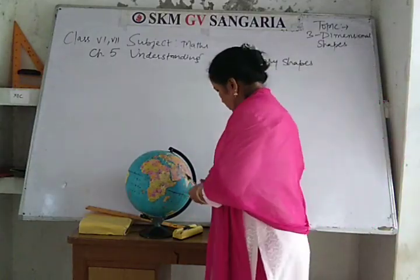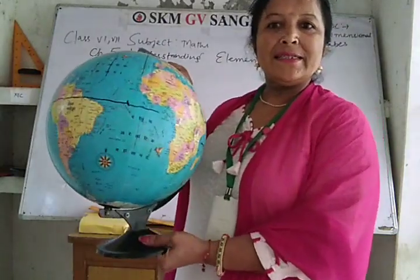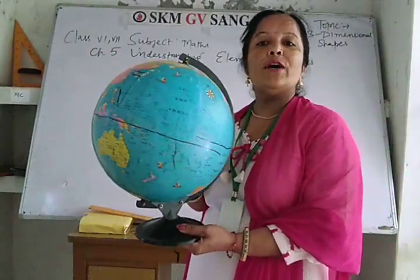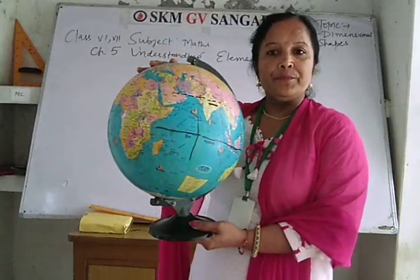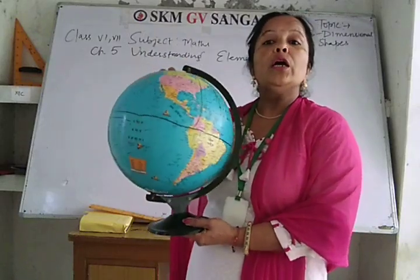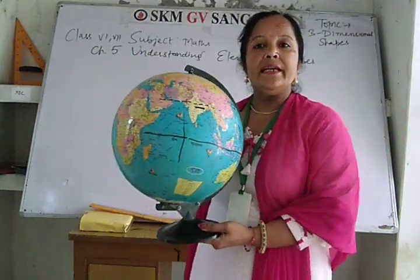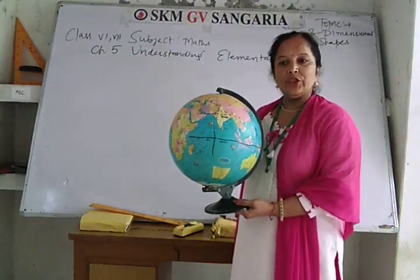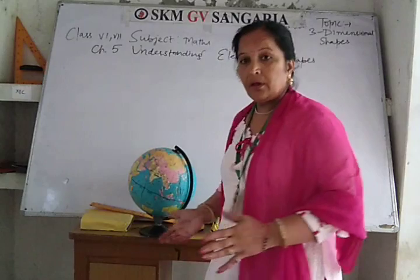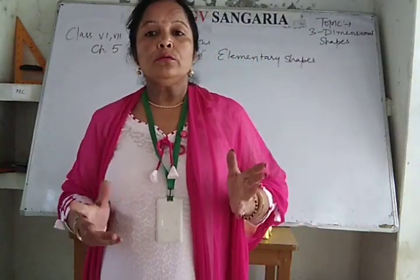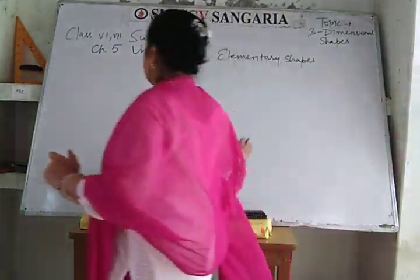When you talk about this model of our earth — this is called a sphere, and this is also a 3D shape. And when you enjoy that ice cream cone, that is also one of the examples of 3D shapes.